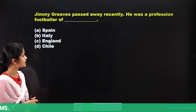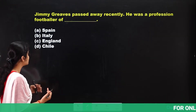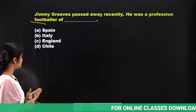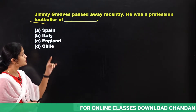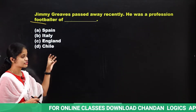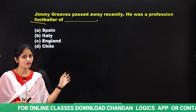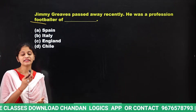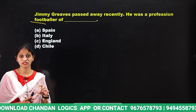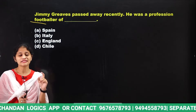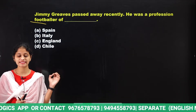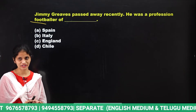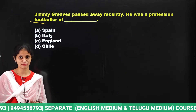Jimmy Graves passed away recently. He was a professional footballer of which country? Options: Spain, Italy, England, or Chile. When going through obituary questions, focus on which country the person belonged to — and sometimes the question may also mention a state name. The question gives the person's name and profession, but asks about the country.